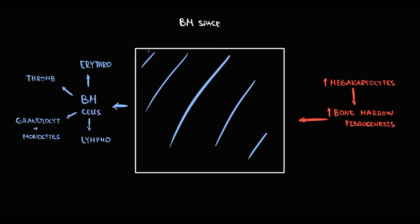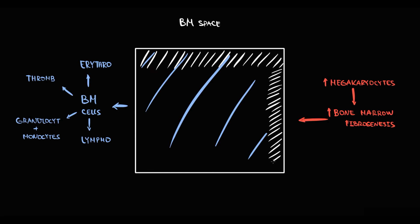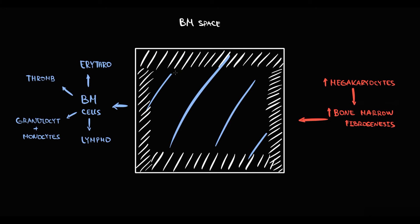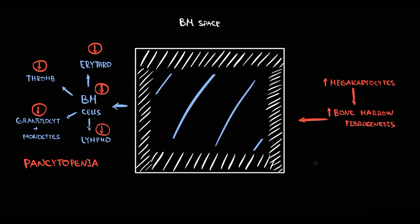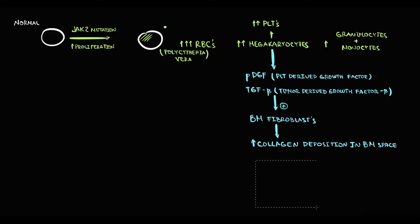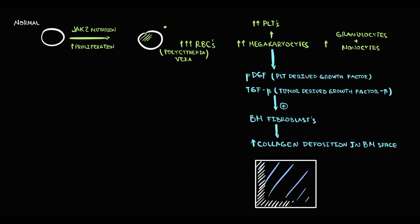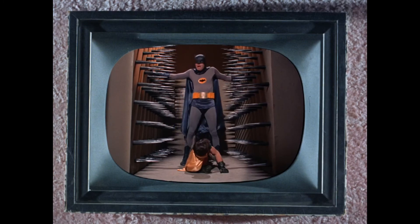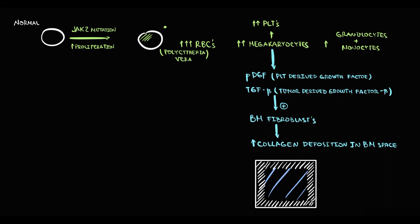With increasing amounts of fibrous tissue inside the bone marrow, bone marrow space decreases. And as we know, the bone marrow is already 100% fully packed with cells. So decreasing bone marrow space forces cells to leave the bone marrow, reducing the amount of cells in the bone marrow, and obviously the amount of cells in the peripheral blood will also decrease. Normal cells are forced to leave this crucial organ, so the production of blood cells progressively decreases, and thereby pancytopenia develops over time.